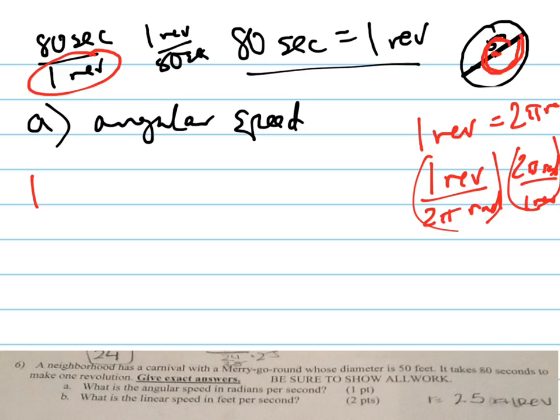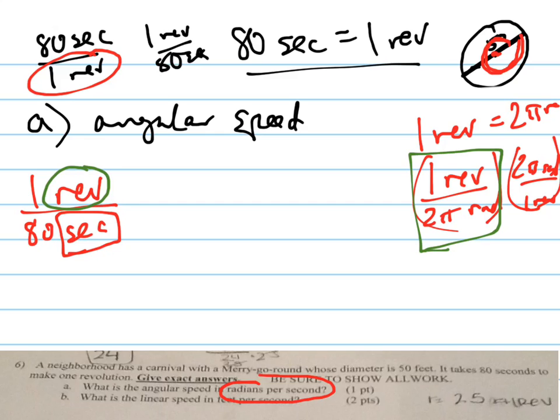I've got one revolution per 80 seconds. And I want to know what the radians per second is. Well, I have seconds here already. All I need to do is convert revolutions to radians. So, I have to find some way to relate revolutions and radians to each other, and there it is. Because one revolution is equal to 2π radians. That's what a revolution is.